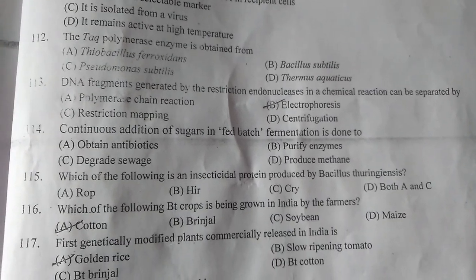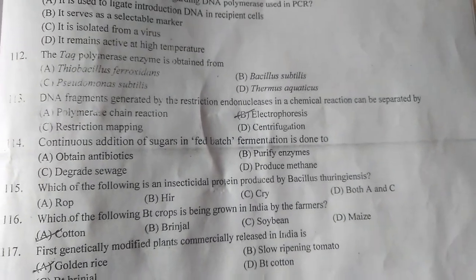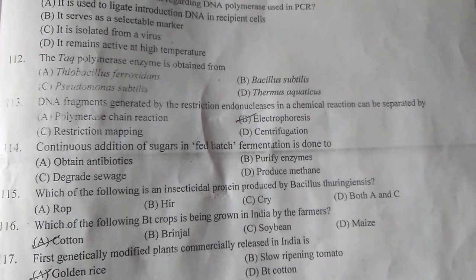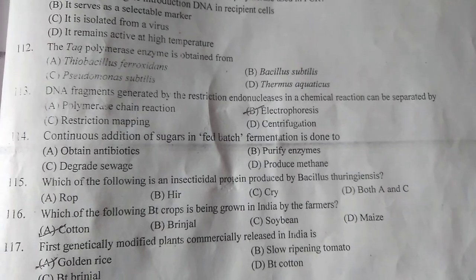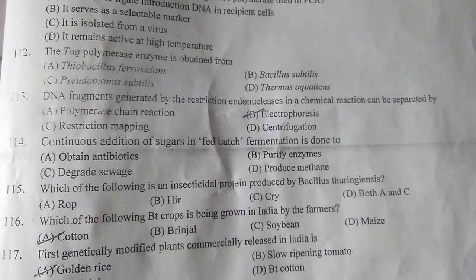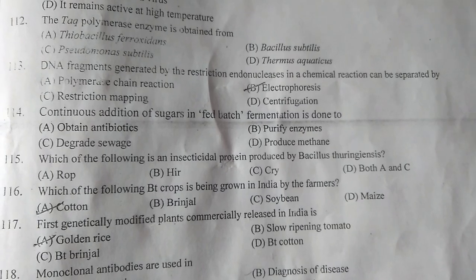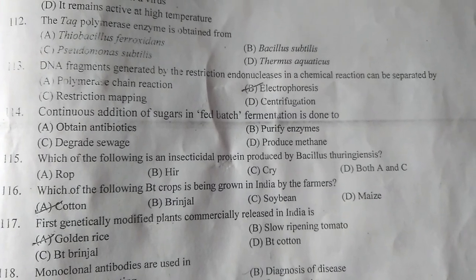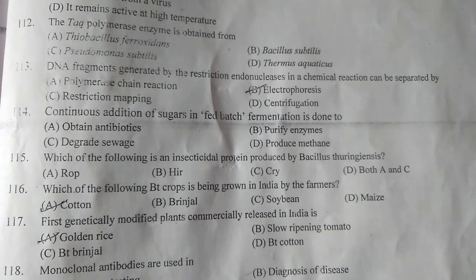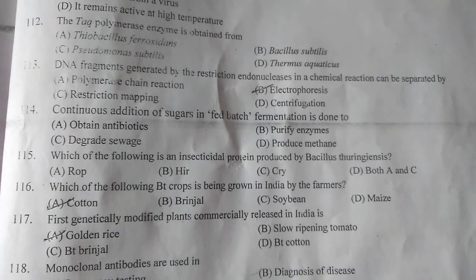Question number 114: Continuous addition of sugar in fed-batch — B is the correct answer — purified enzymes. Question number 115: Which of the following insect-resistant protein is produced by Bacillus thuringiensis? The answer is C.